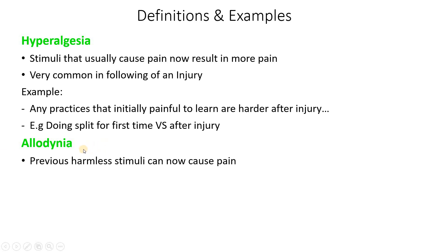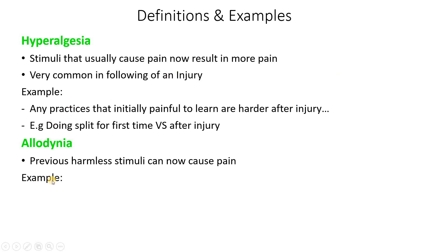Now let's see what is meant by allodynia. Allodynia is when any previously harmless stimuli can now cause pain. The main distinguishing feature between the two is that in hyperalgesia the stimuli used to cause pain even before the injury, but in allodynia the stimuli you're exposed to didn't harm you in any case before — but now can cause you pain because of the injury.